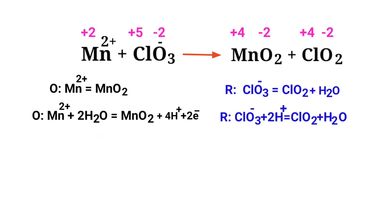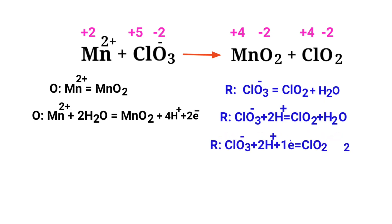Now balance the charges in the reduction half reaction. Both sides are not equal. To make them equal, add one electron to the left side to make it equal to zero. Now the charges are equaled in the reduction half reaction.